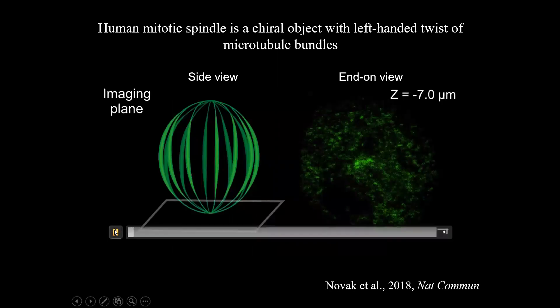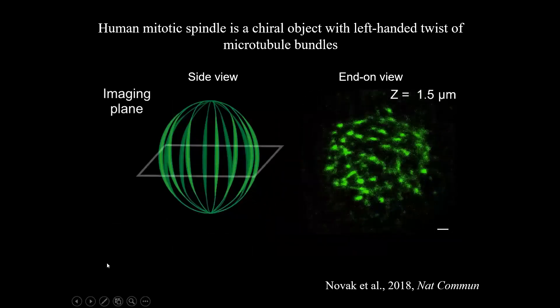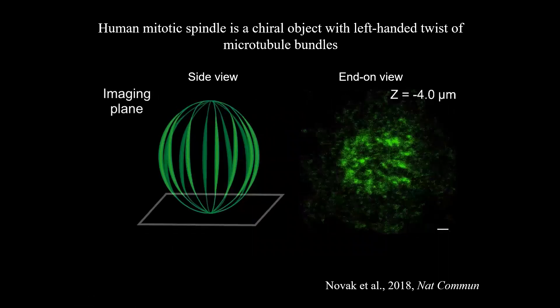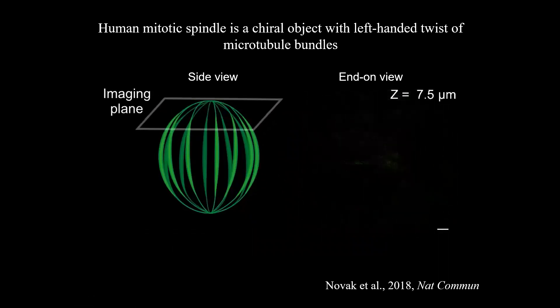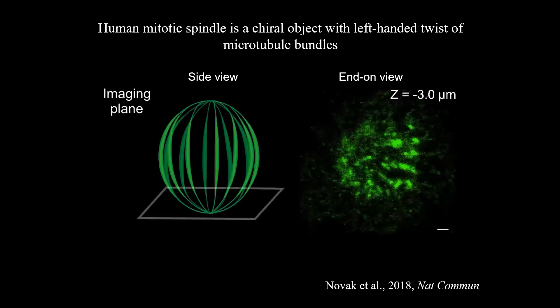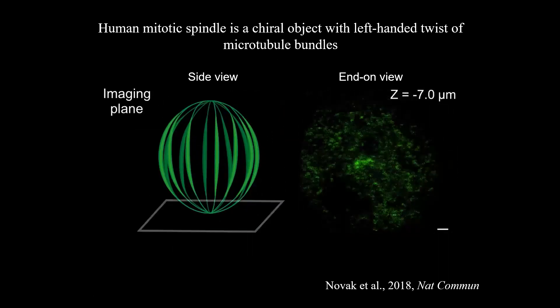Recently, we have shown that the shape of the mitotic spindle in human cancer cell lines is chiral, as the spindle has a left-handed twist around the pole-to-pole axis. Microtubule bundles twist because of the torques that exist within them in addition to other linear forces.